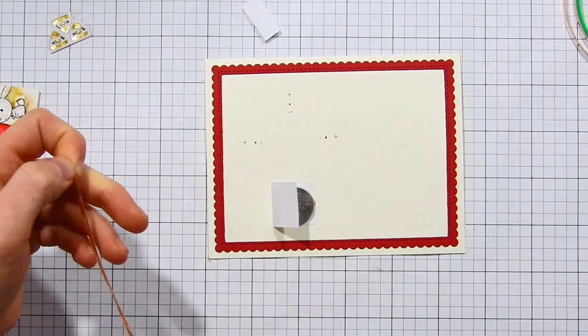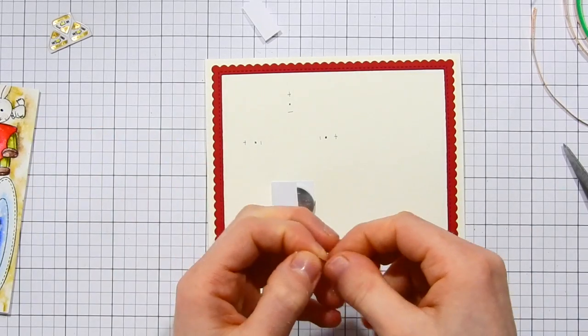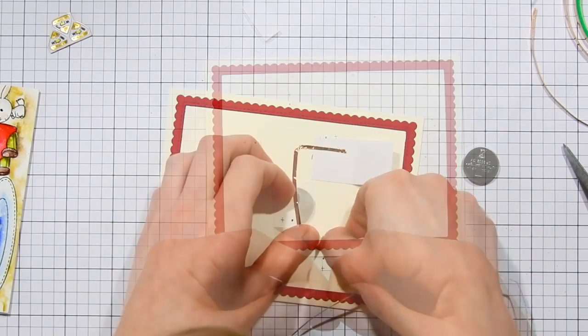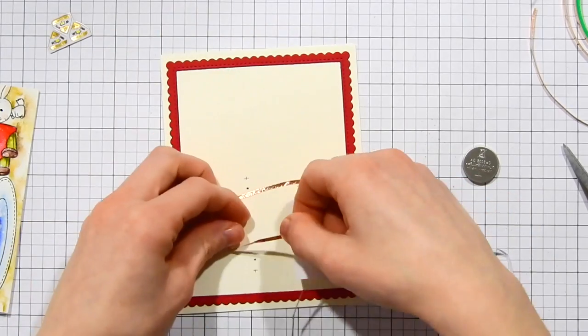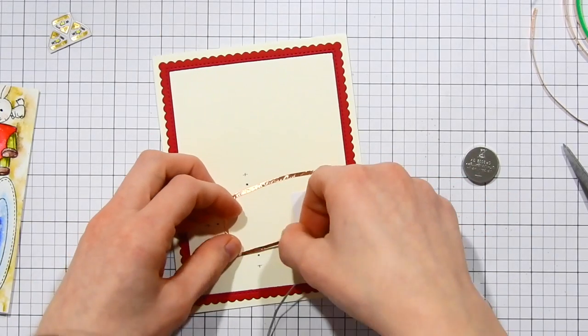If that doesn't make sense to you go ahead and keep watching because you'll see how I go ahead and add on these circuits. So I'm adding the circuits down onto my card now and I'm starting off by applying the negative portion here first.